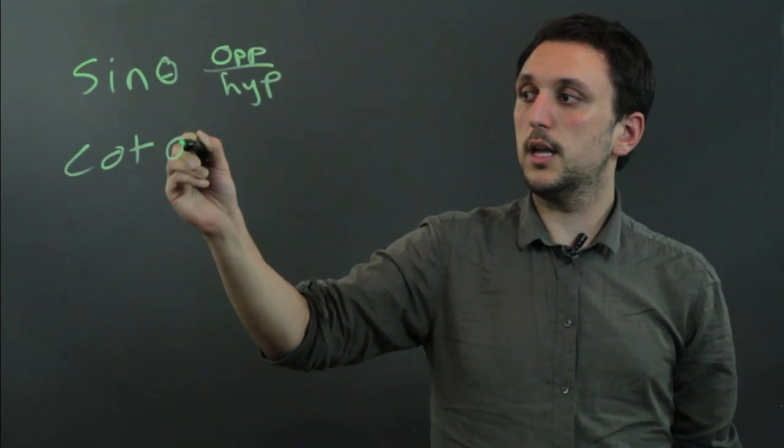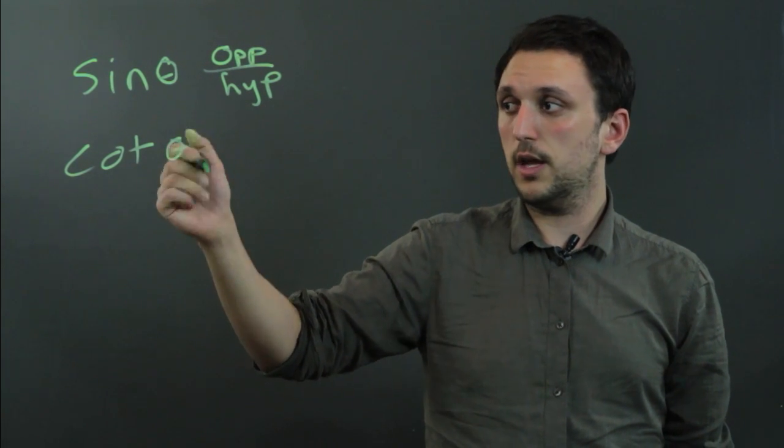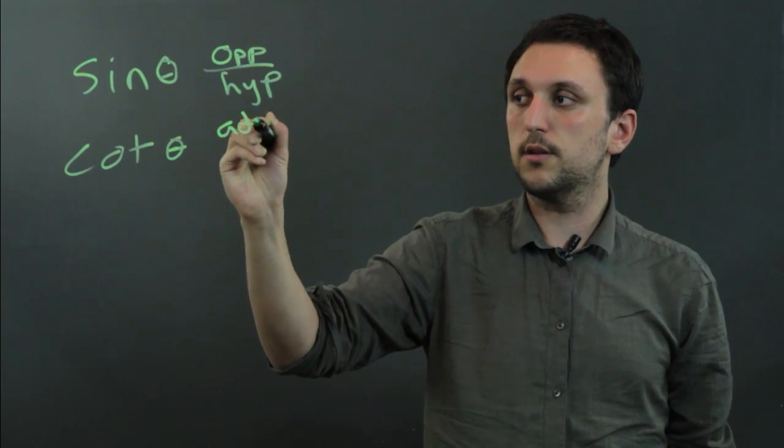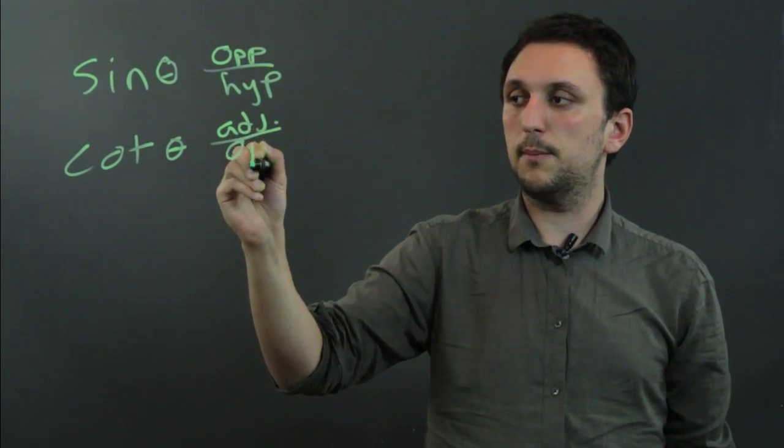And cotangent theta is the inverse of tangent. And tangent is opposite over adjacent, so cotangent is adjacent over opposite.